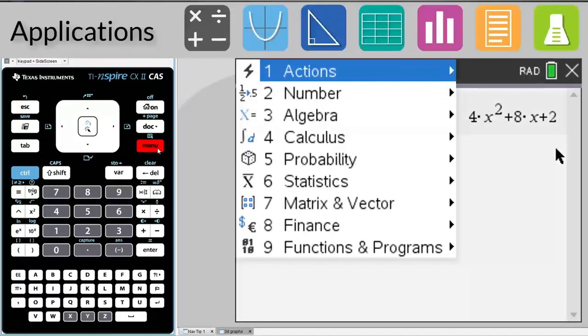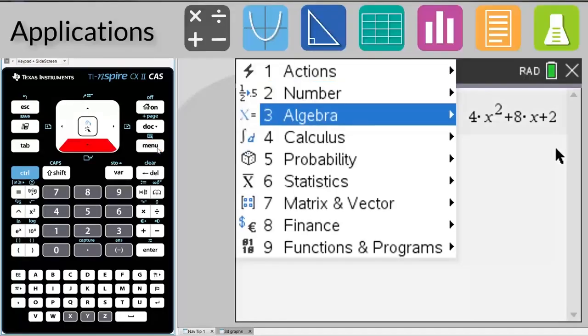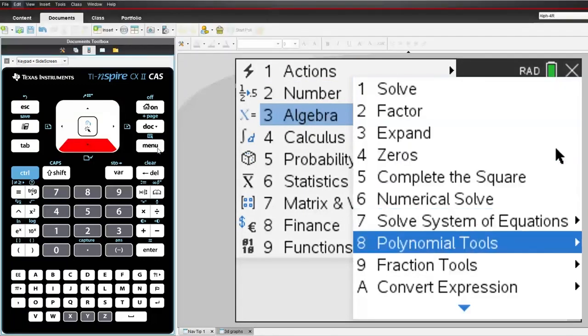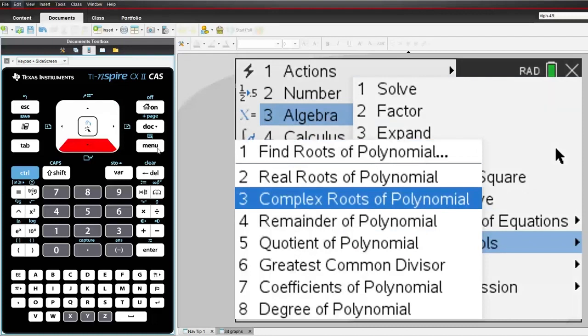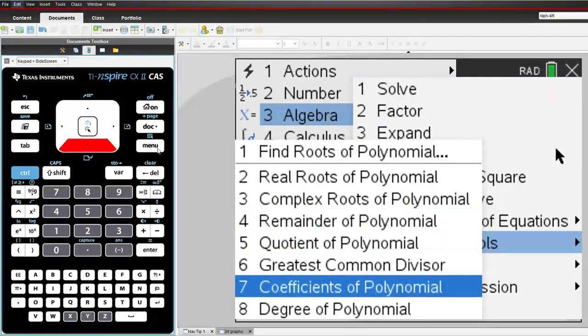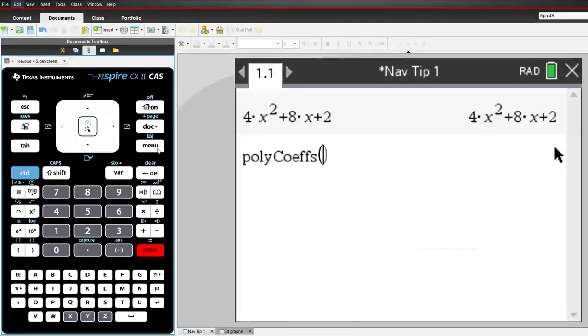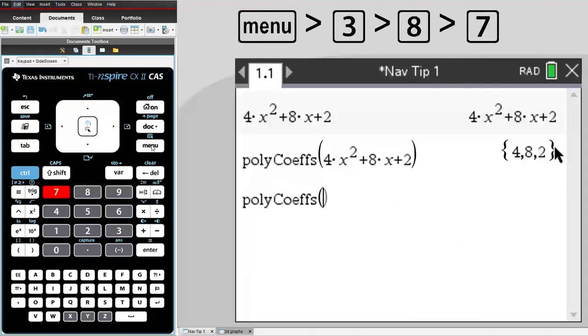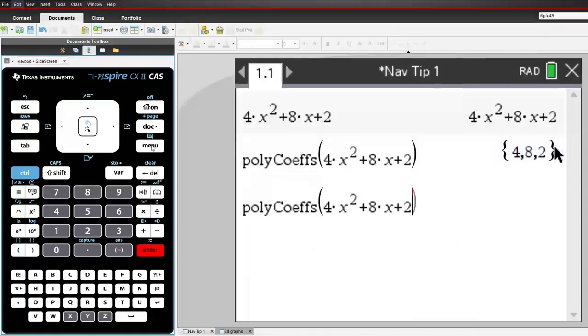You can use the navigation pad to scroll up and down through a menu, but you will notice that menu items are preceded by a number. You can tap the corresponding number on the keypad to access the menu item. As you become more familiar with the menu items and their locations, you'll find yourself navigating through menus faster than anyone could possibly read them.